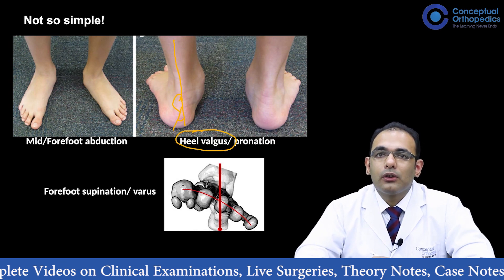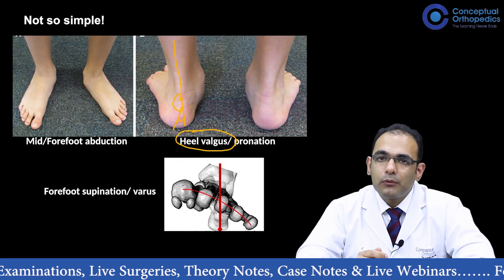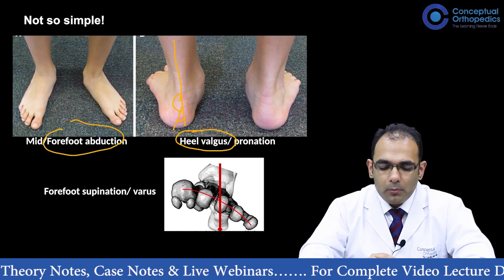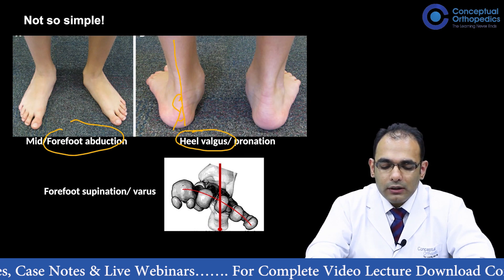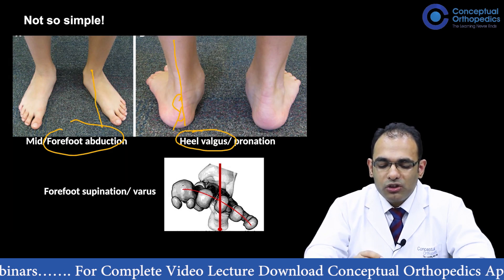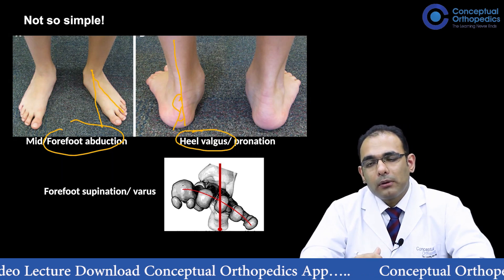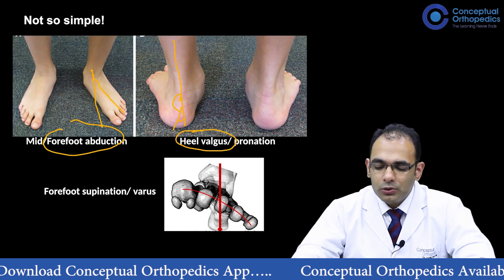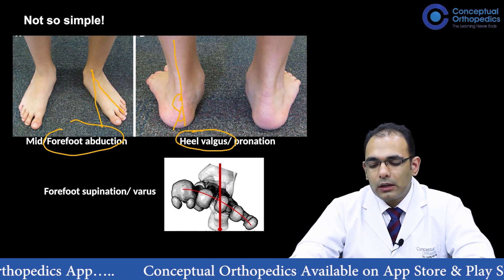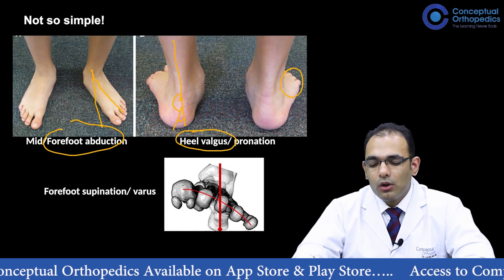The other deformity is a forefoot abduction deformity. The abduction actually happens at the midfoot region, which is the talonavicular or calcaneocuboid joint. The patient's foot normally would be pointing fairly straight, but in the case of a flat foot it goes laterally — the whole forefoot gets abducted around the talonavicular joint. Similarly, when you look at the patient from the back, you would see that more than two toes are visible. This is called the 'too many toes sign' and it also signifies forefoot abduction.